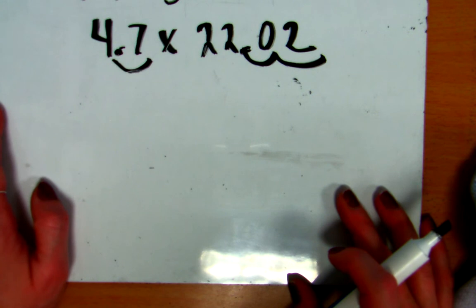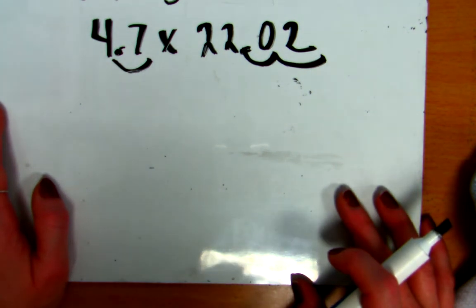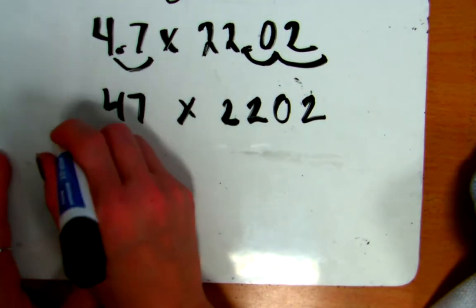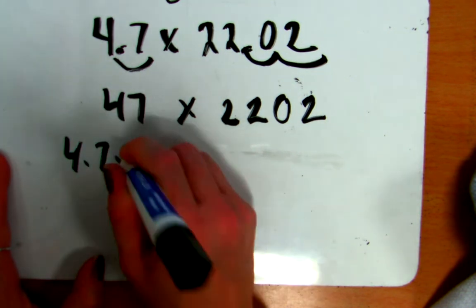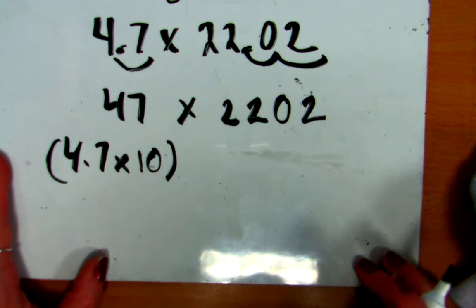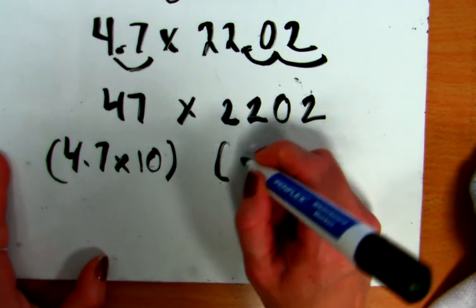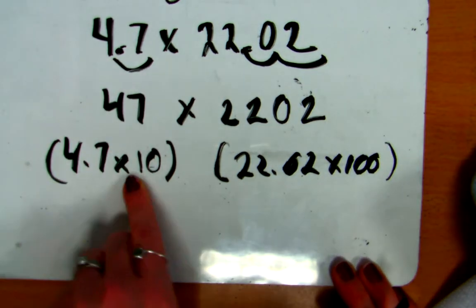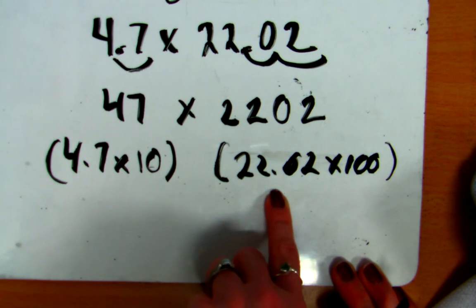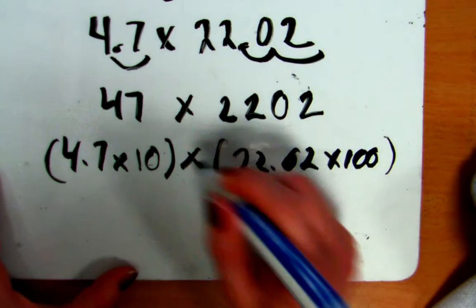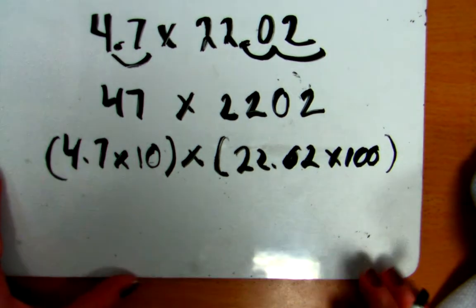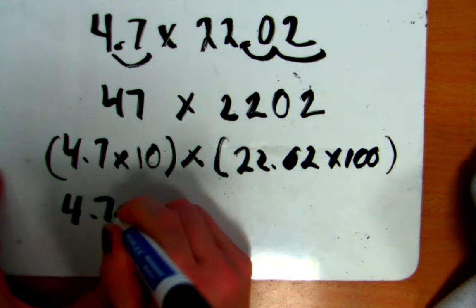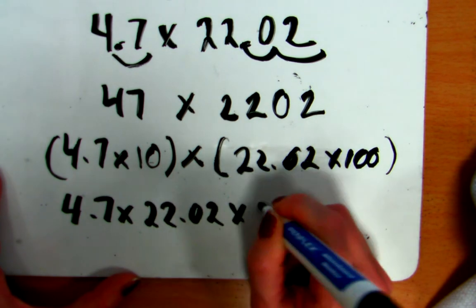One final way that I actually think is really important as well is, what happens? We know we take the decimal points out. Well, what have we done when we did that? We essentially multiplied 4.7 here by ten. So, 47 is 4.7 times ten. And, 2202 is 22.02 times a hundred. Because we moved this decimal place once, which is a factor of times ten. We moved this decimal place twice, which is a factor of a hundred. So, because those two numbers are being multiplied together, because of the rules of multiplication, I can reorganize things because order doesn't matter. So, I'm going to rewrite this. It's 4.7 times 22.02 times ten times a hundred.